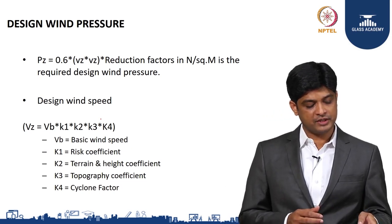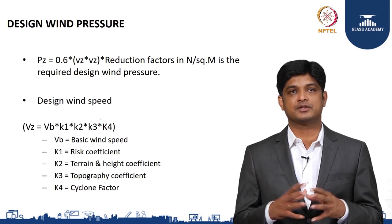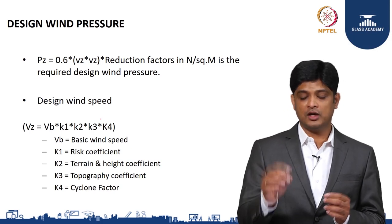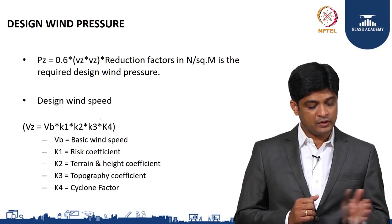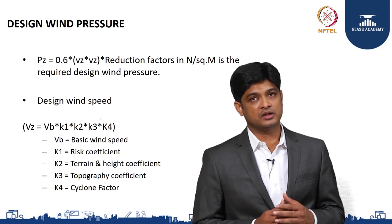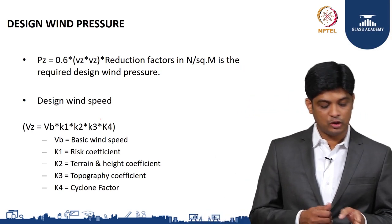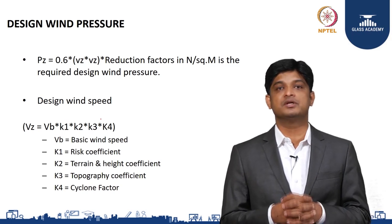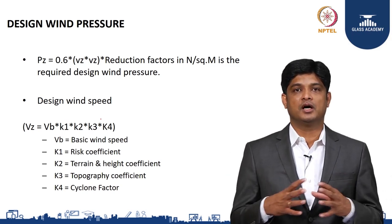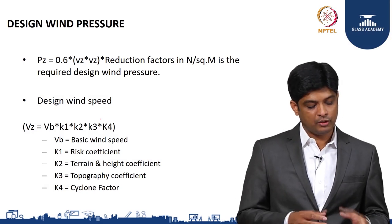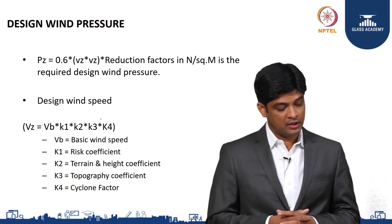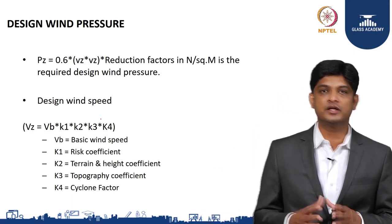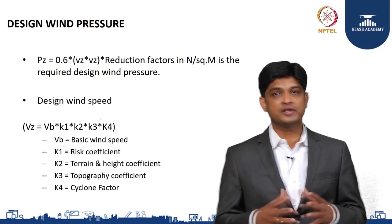To calculate wind pressure, you first need the basic wind speed from IS 875, which is a graphical representation — based on your location, you identify the colour code, and the wind speed is given for that code. Once you know the basic wind speed, there are four adjustment factors: k1 is the risk coefficient based on building type — whether it is a permanent structure, an emergency structure, or one designed for 35 to 45 years. Then there are terrain and height coefficients and topography, and the fourth is the cyclone factor, recently added considering the high-intensity cyclones seen in the last 10 to 15 years.